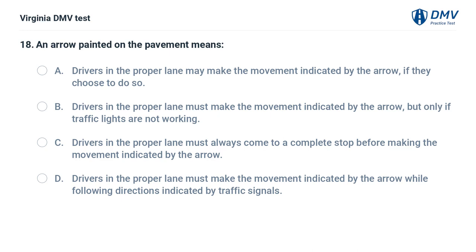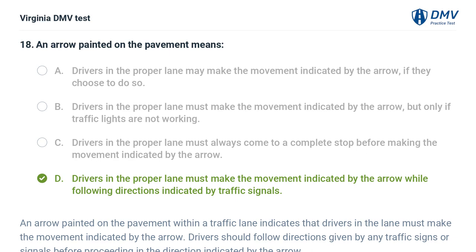An arrow painted on the pavement means: A. Drivers in the proper lane may make the movement indicated by the arrow if they choose to do so, B. Drivers in the proper lane must make the movement indicated by the arrow but only if traffic lights are not working, C. Drivers in the proper lane must always come to a complete stop before making the movement, D. Drivers in the proper lane must make the movement indicated by the arrow while following directions indicated by traffic signals. The correct answer is D. An arrow painted on the pavement within a traffic lane indicates that drivers in the lane must make the movement indicated by the arrow. Drivers should follow directions given by any traffic signs or signals before proceeding in the direction indicated by the arrow.